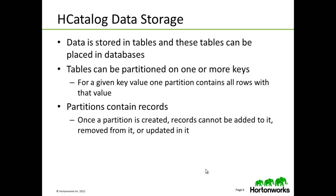H-Catalog presents a relational view of the data. Data is stored in tables, and these tables can be placed in databases. Tables can also be hash partitioned on one or more keys — for a given value of a key or set of keys, there will be one partition containing all rows with that value or set of values. For example, if a table is partitioned on date and there are three days of data, there will be three partitions. New partitions can be added to a table, and partitions can be dropped from a table.